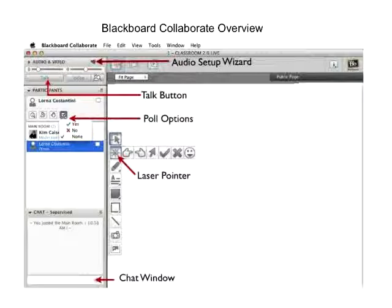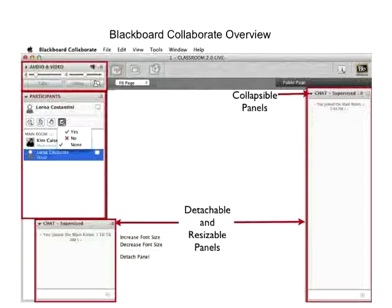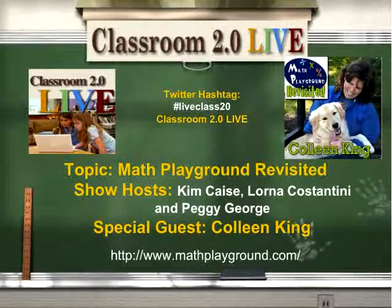That will probably be once we close out the session. And then we'll be using our laser pointer, which is the whiteboard tool. You'll sometimes have to click on the button twice to activate the laser pointer. And we'll be doing some voting, and you'll vote right below your name by clicking yes, no, or ABCD. Most of you have found the chat window, and these are collapsible — you can drag them and resize them to fit your preference.